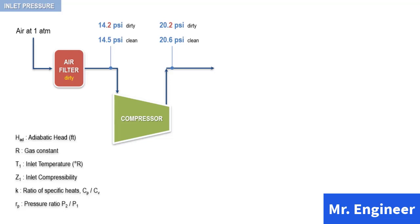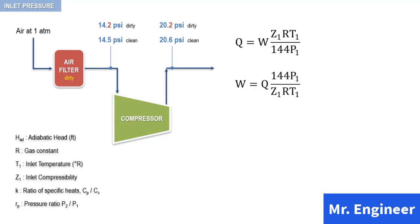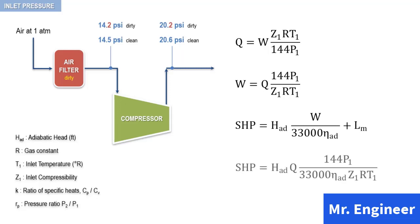As you can see, for a centrifugal compressor, a decrease in the inlet pressure will result in a decrease in the discharge pressure. Now, to assess the effects of a variation in inlet pressure, let's refer back to the volume flow equation. Rearranging it will give a new equation. Comparing this with the shaft horsepower equation seen in a previous video, we find that shaft horsepower is proportional to weight flow or inlet pressure.